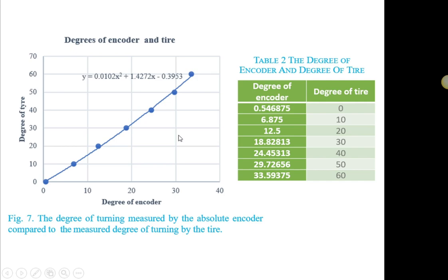So when the user input, which is from the joystick given to the system, so the encoder will read the angle that has been met by the steering system. And then this degree will be converted into the degree of the tire and so that the movement of the tire will be moved accordingly to the specified value.